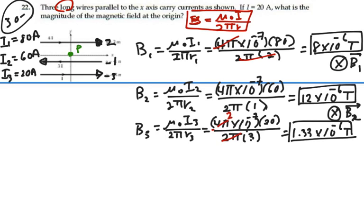And then pointing in the direction of that current, which is to the right, at point P, I would be curling out of the page. So I have two of these that are going into the page at the origin and one coming out of the page. So B3 will subtract from the other two.